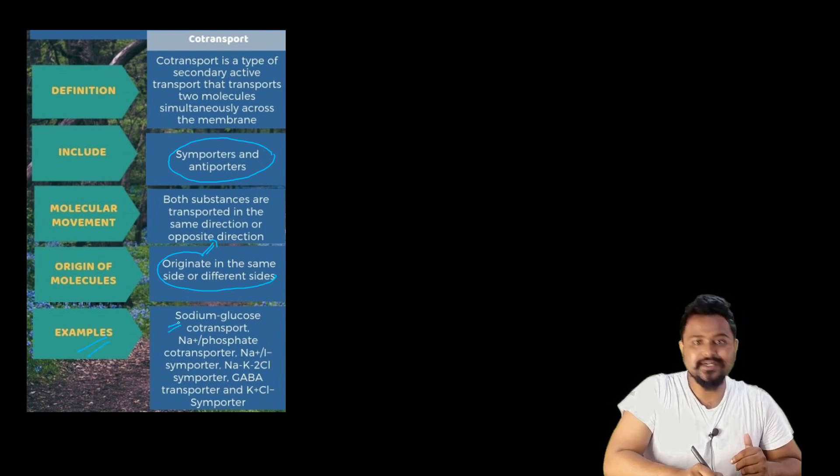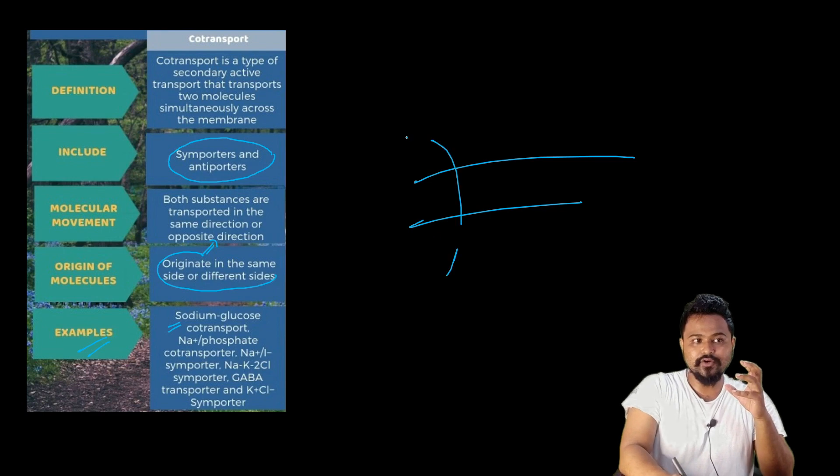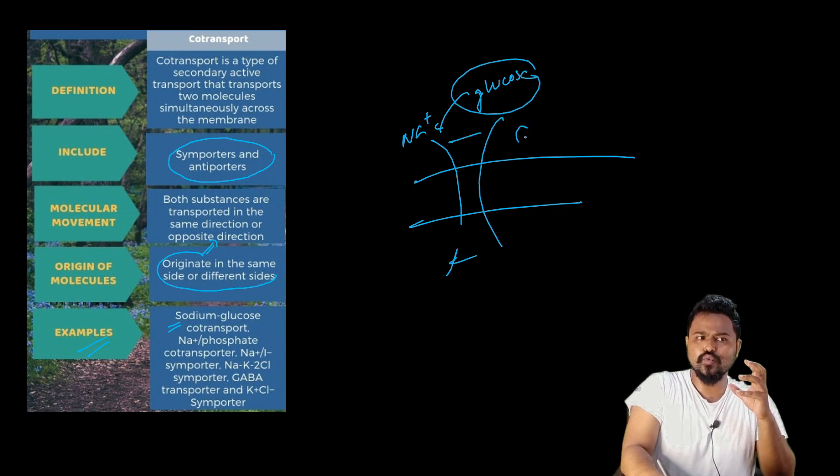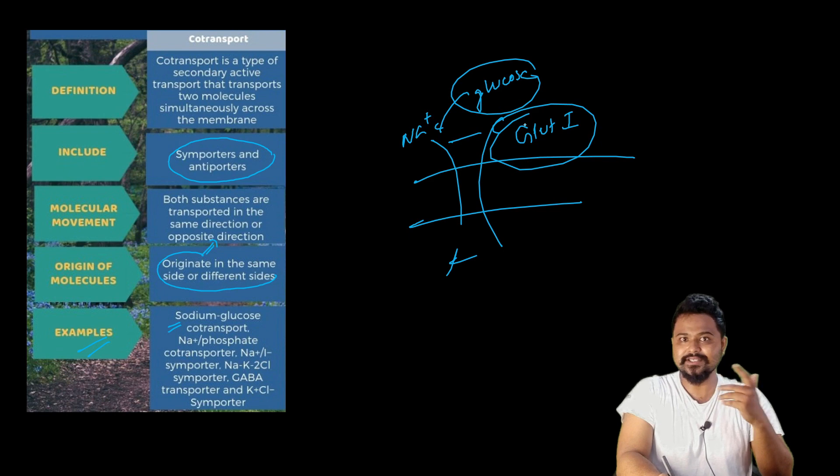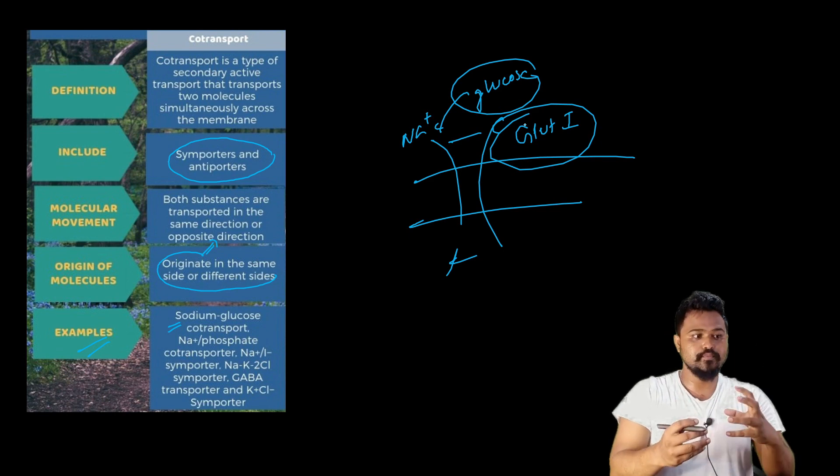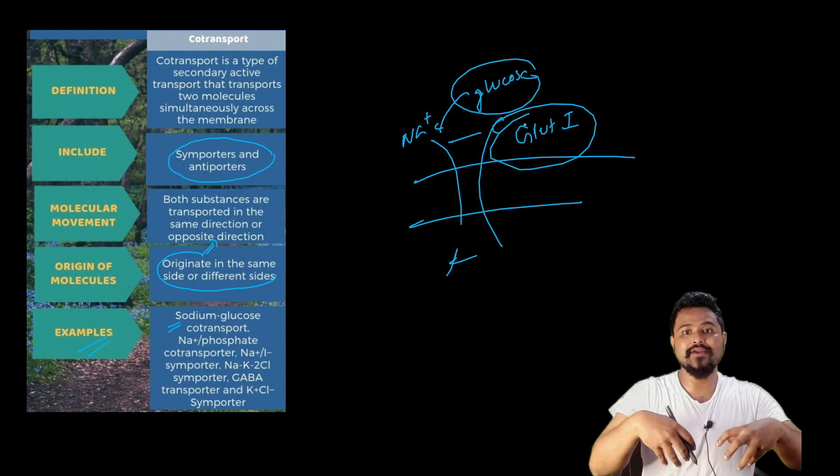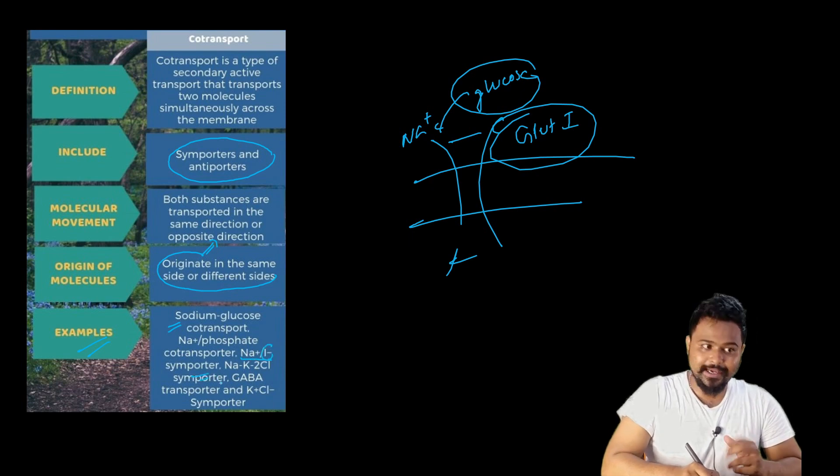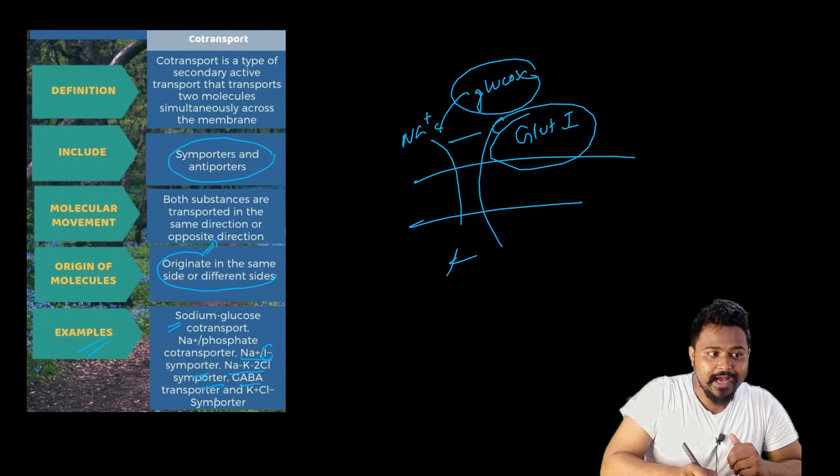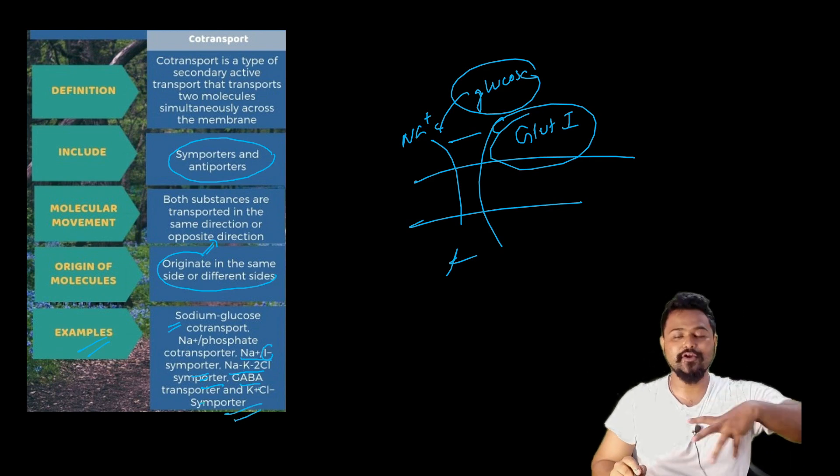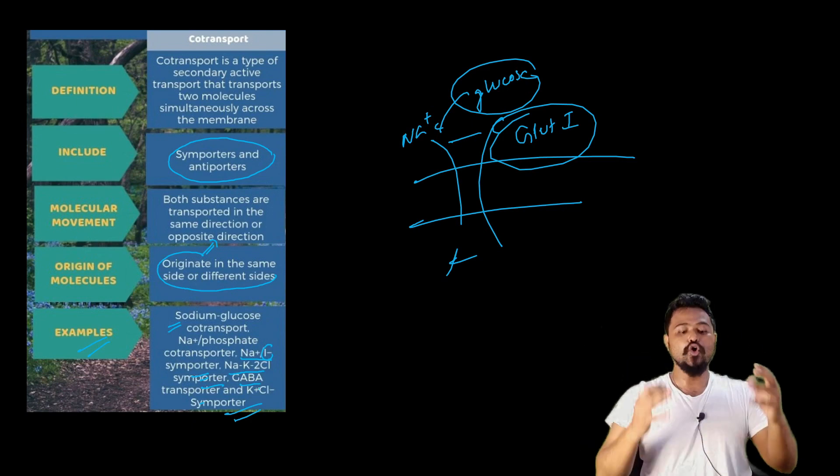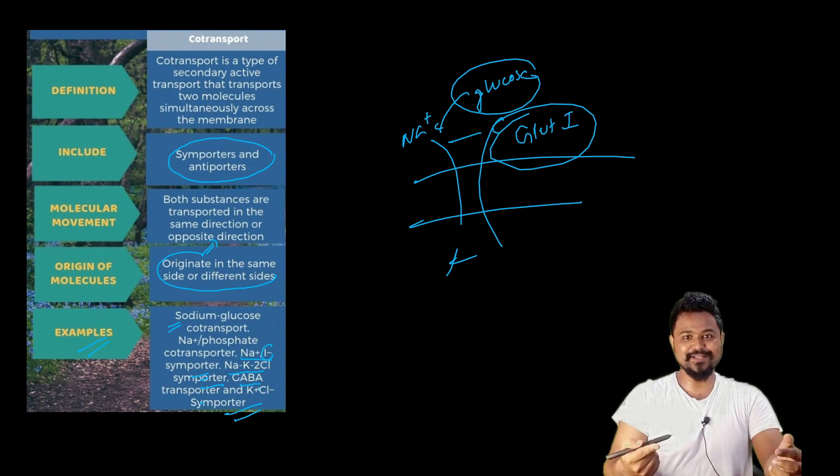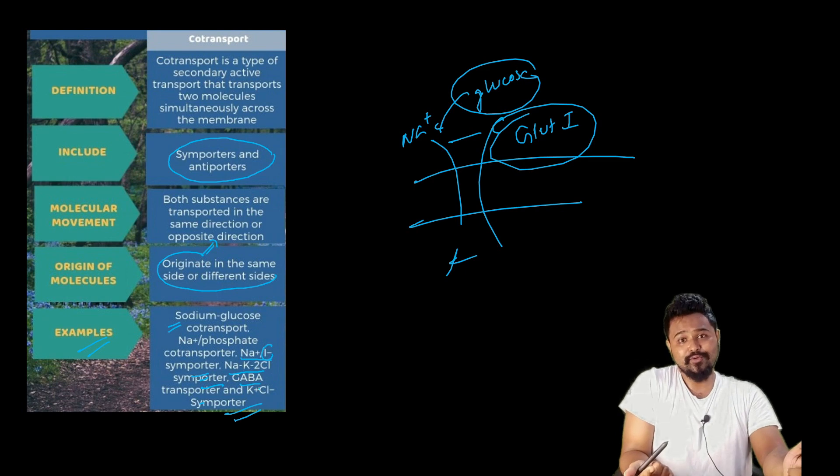For example, sodium-glucose transport: sodium passes through together with glucose using a transport protein carrier system. Examples include sodium-glucose transporter, sodium-iodine symporter, sodium-potassium-chloride symporter, GABA transporter, and potassium-chloride symporter.